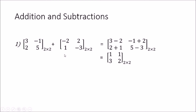To add the two matrices, we add the corresponding elements at each location separately. We take the (1,1) element of the first matrix, which is 3, and add it to the (1,1) element of the second matrix, which is −2, giving 1. Then the (1,2) elements: −1 plus 2 equals 1. Then the (2,1) elements: 2 plus 1 equals 3. Finally the (2,2) elements: 5 minus 3 equals 2. That is how you add two matrices.